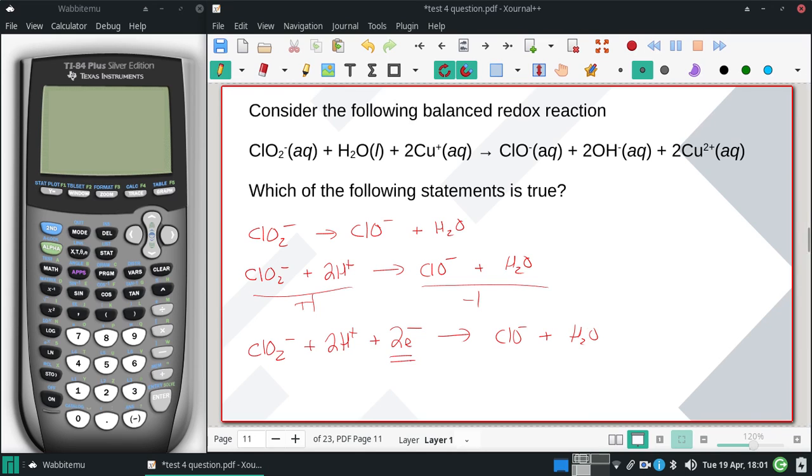And since electrons are reactants, this is a reduction. And this would be an oxidizing agent. And that's what we're kind of looking for in the answers. Which one tells us it's an oxidizing agent and which one tells us it's also a reduction.